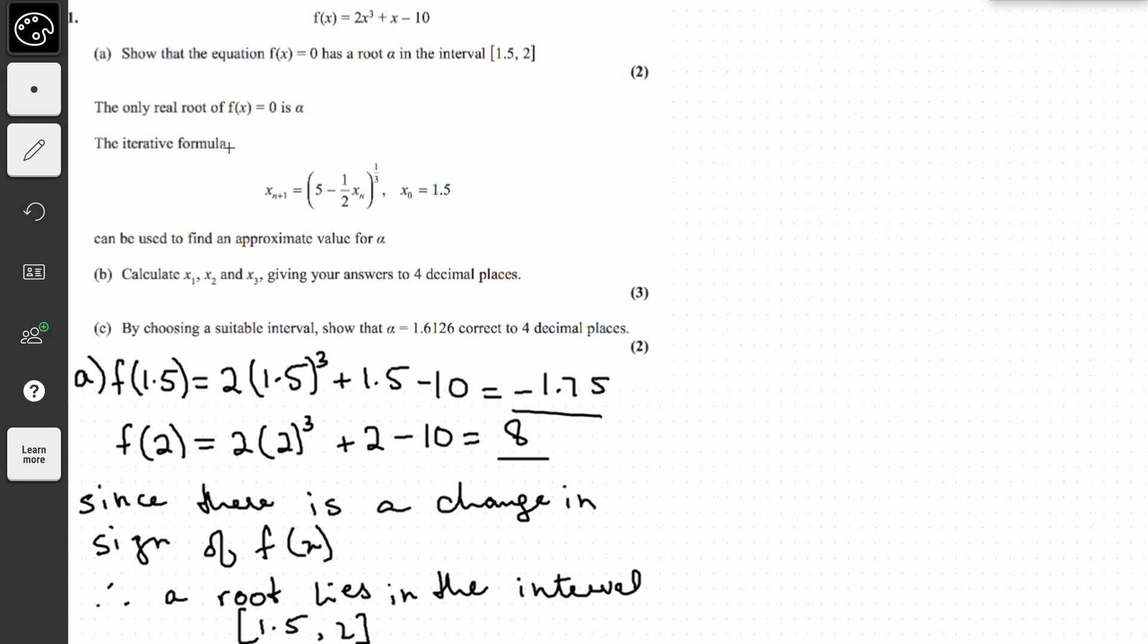Now it's written that the only real root of f(x) = 0 is alpha. The iterative formula can be used to find an approximate value for alpha. Calculate x₁, x₂, and x₃, giving your answers to 4 decimal places.